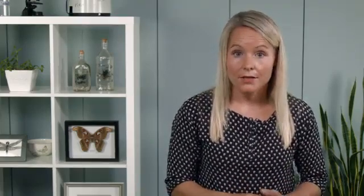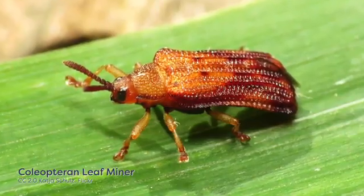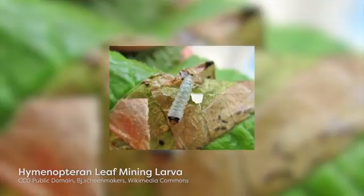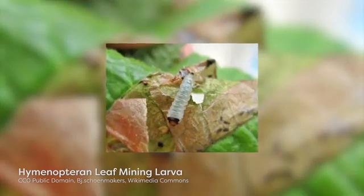Many moth larvae spend at least part of their development as leaf miners. Leaf mining is most common in larval moths and larval flies, though representatives of the Coleoptera and Hymenoptera also have leaf mining species.